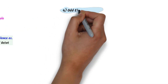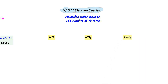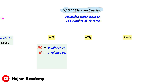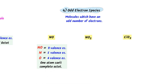The last limitation of the octet rule is odd electron species — molecules which have an odd number of electrons whose stability the octet rule cannot explain. For example, in nitric oxide (NO) there are 11 electrons total: 5 from nitrogen and 6 from oxygen. Because the total is odd, one atom cannot complete its octet, so the octet rule cannot explain the stability of NO.